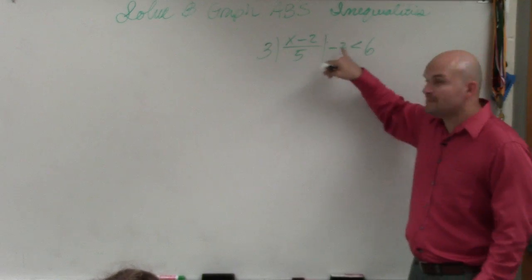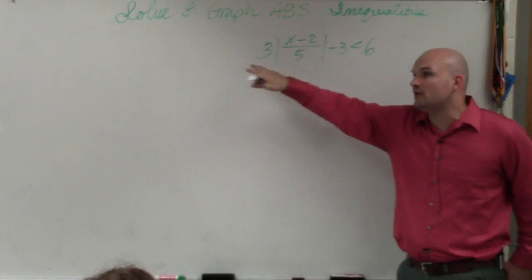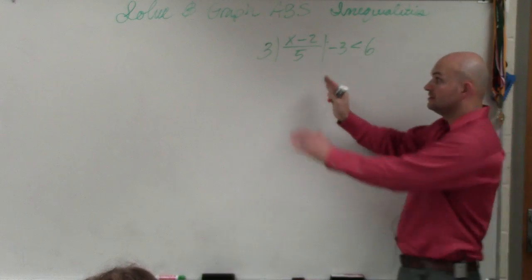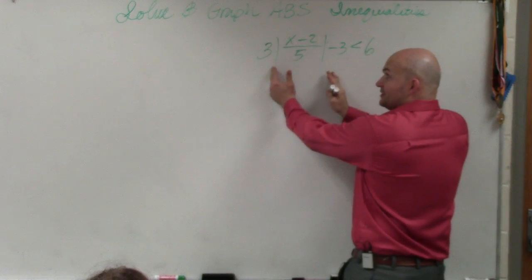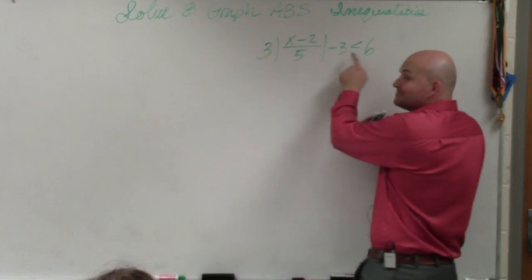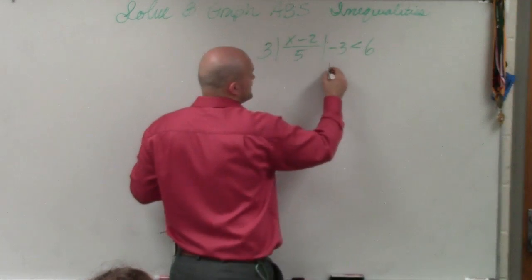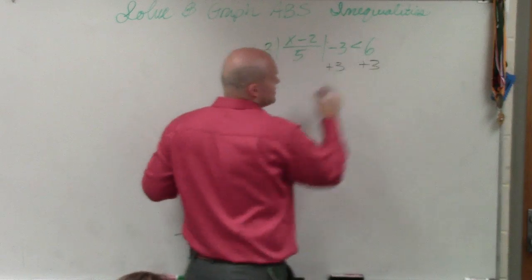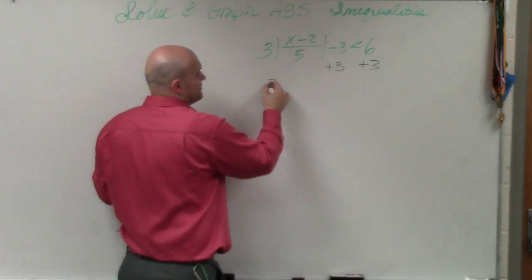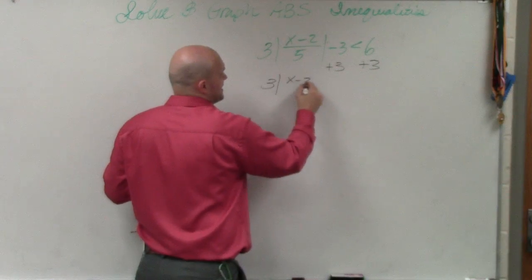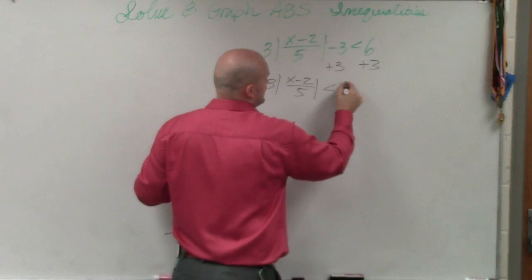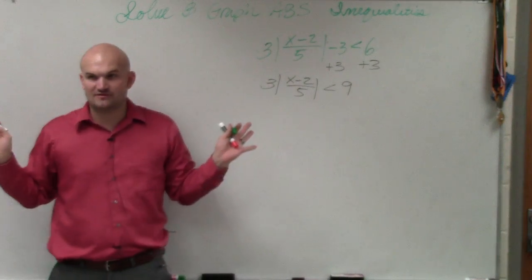There's a couple things I noticed. Do not worry about what the inequality is until you've isolated your absolute value. You guys can see my absolute value here is being multiplied by 3 and it's being subtracted by 3. So we're always going to want to undo addition and subtraction first. So I add a 3 to both sides. So I have 3 times absolute value of x minus 2 over 5 is less than 9. Does everybody follow me so far?